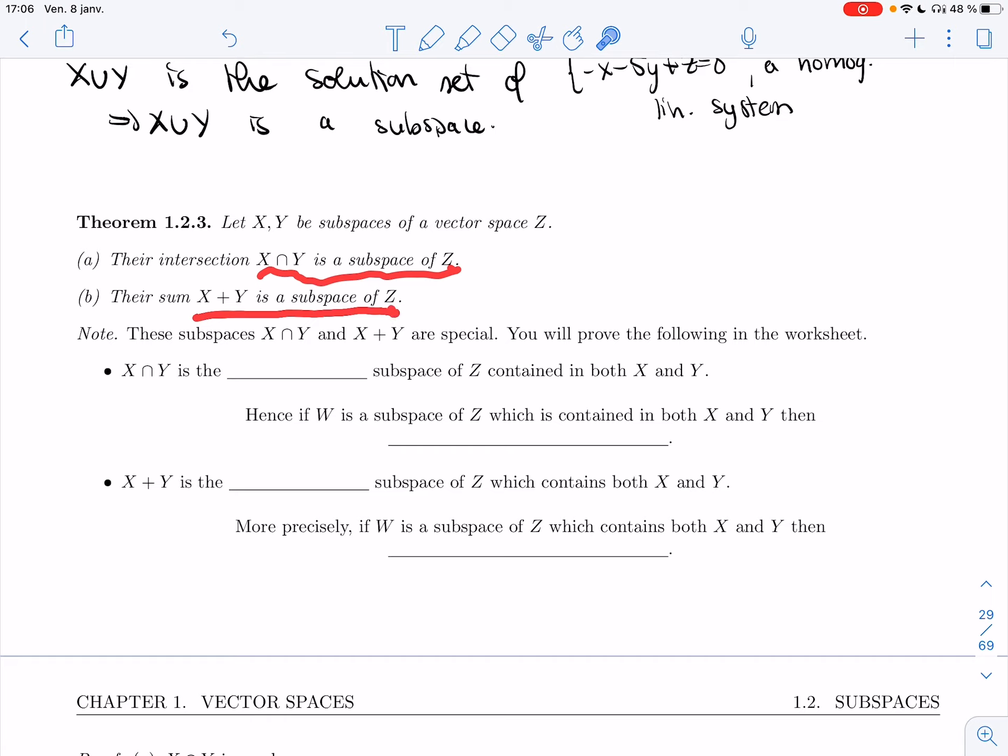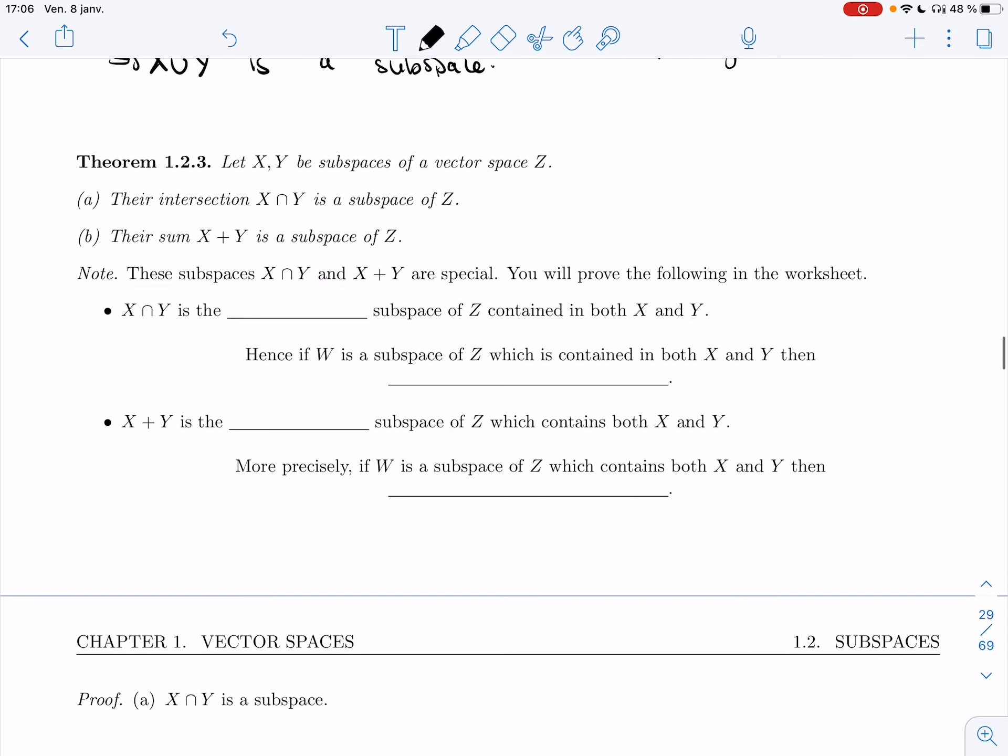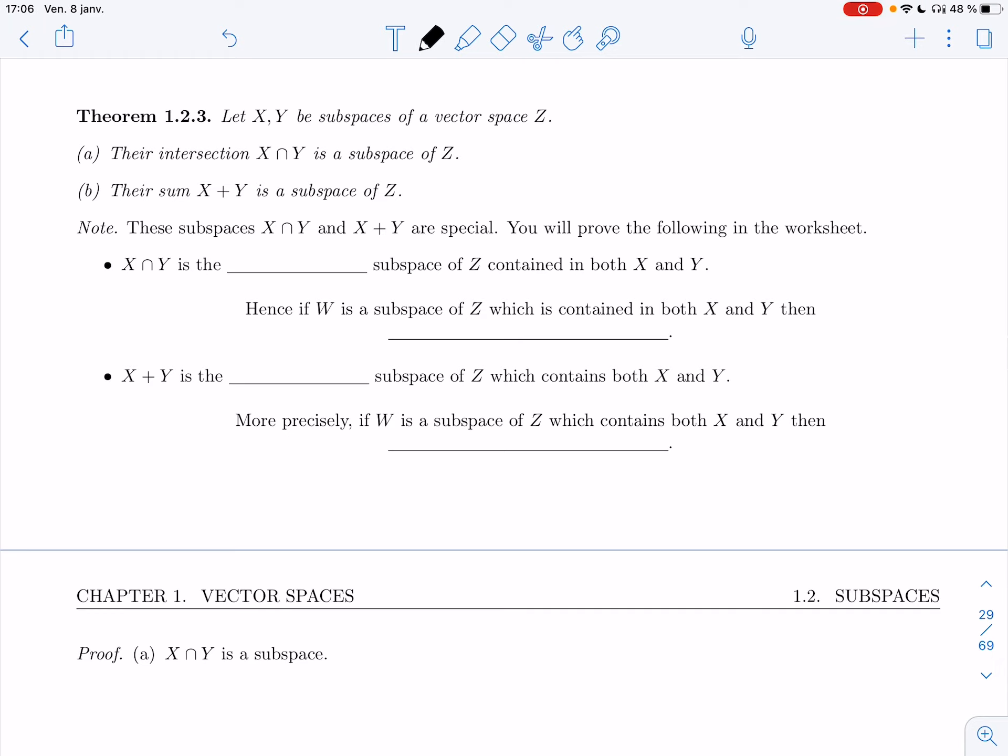Note that these subspaces, X intersection Y and X plus Y, are special. You'll prove the following in the worksheet. The intersection is the biggest subspace of Z contained in both X and Y. So if W is a subspace which is contained in both X and Y, then W will be inside the intersection.